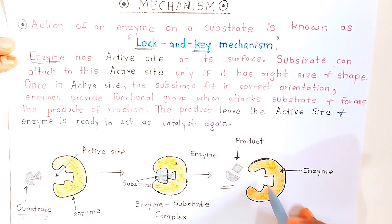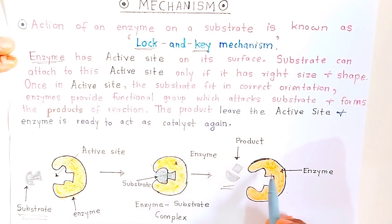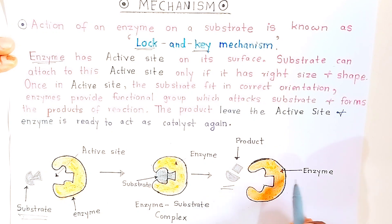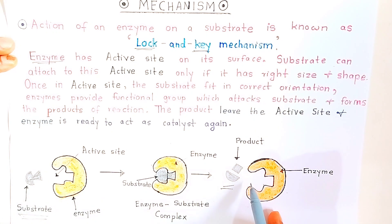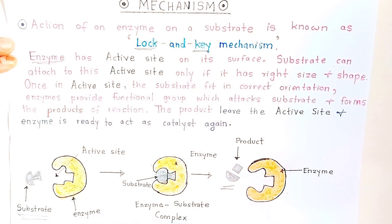The enzyme is ready to act as a catalyst again. Without participating in the reaction itself, the enzyme can be used again in a second reaction. The enzyme is not converted into a product — it converts the substrate into two products. This is a very important mechanism.